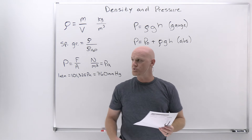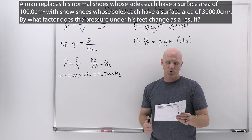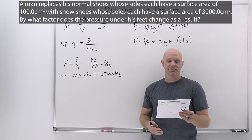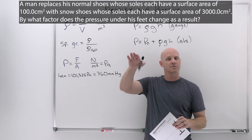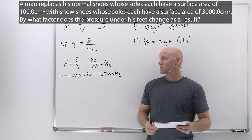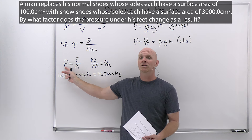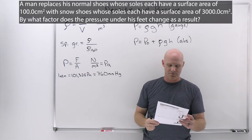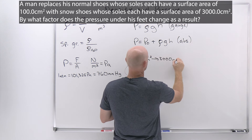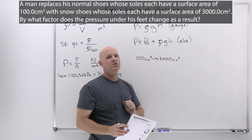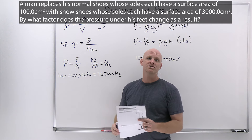A man replaces his normal shoes, whose soles each have a surface area of 100.0 cm², with snowshoes whose soles each have a surface area of 3000.0 cm². By what factor does the pressure under his feet change? The whole point of snowshoes is decreasing pressure so you're less likely to sink into snow. By having a much larger surface area, a 30-fold increase in area leads to a 30-fold decrease in pressure.